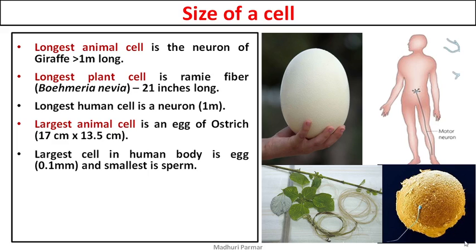The egg cell is 0.1 millimeters. The smallest cell in the human body is a sperm. You can see the difference in size — the largest cell in human body is the egg and the smallest cell in human body is a sperm.